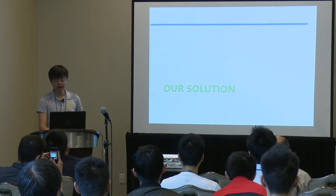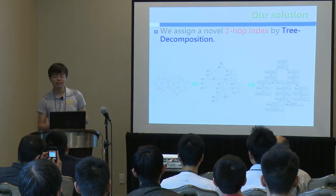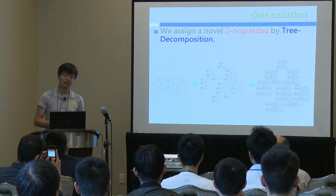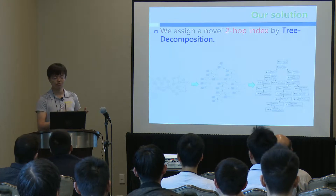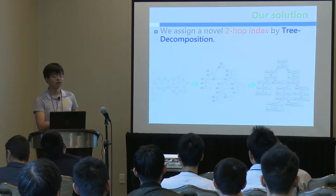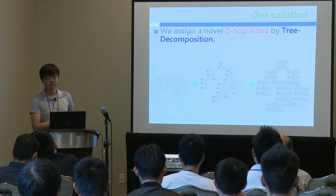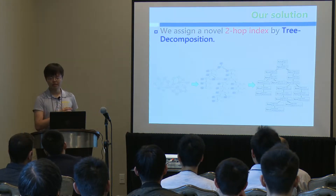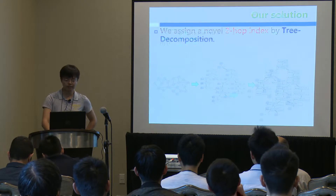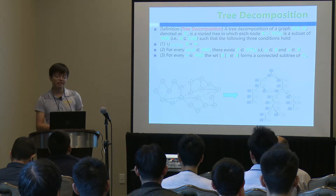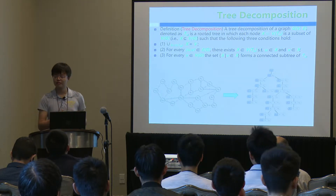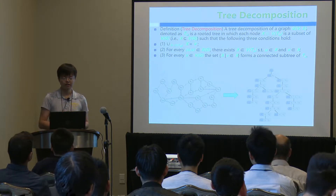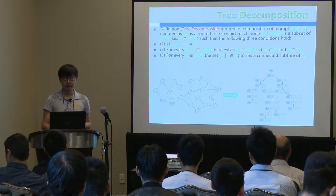Our solution is to assign a two-hop index for the tree decomposition. First, we have an original graph and transfer it to a tree using tree decomposition. Then we build the two-hop index on the tree decomposition. Tree decomposition is an existing technique used for NP-hard problems in graphs, but it can also be used for shortest paths.